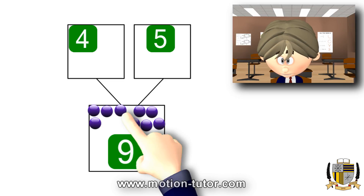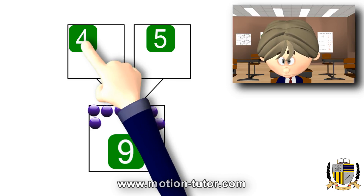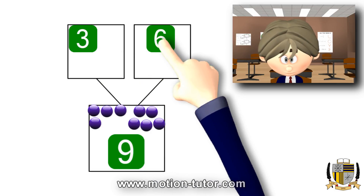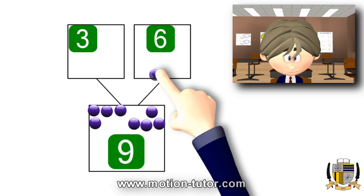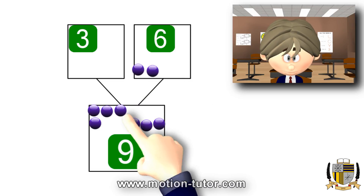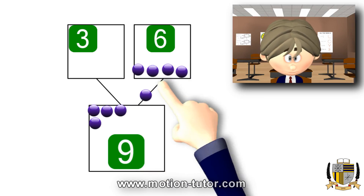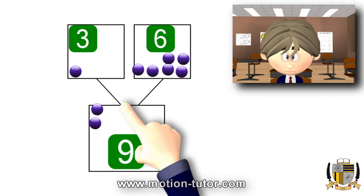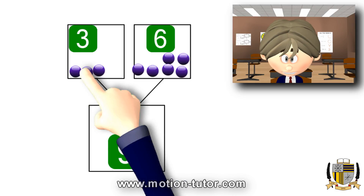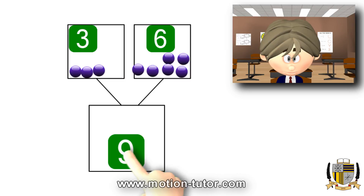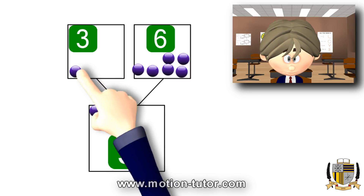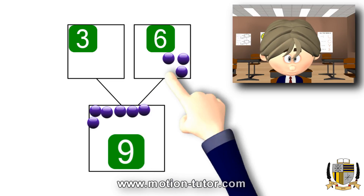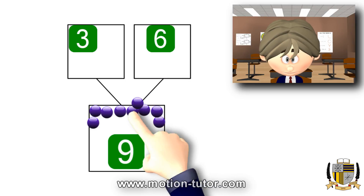And I proved it using these marbles. You can see this can go on and on — you can have different combinations. I can have three and six, and it would still be nine. I'll show you one more time. See, that's six and here's three. You see, if we put these three down here and we put these six — it would be nine. One, two, three, four, five, six, seven, eight, and nine.